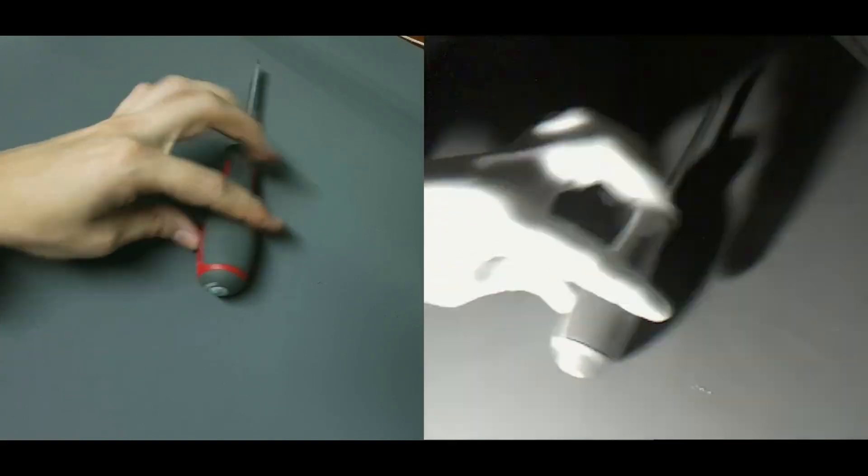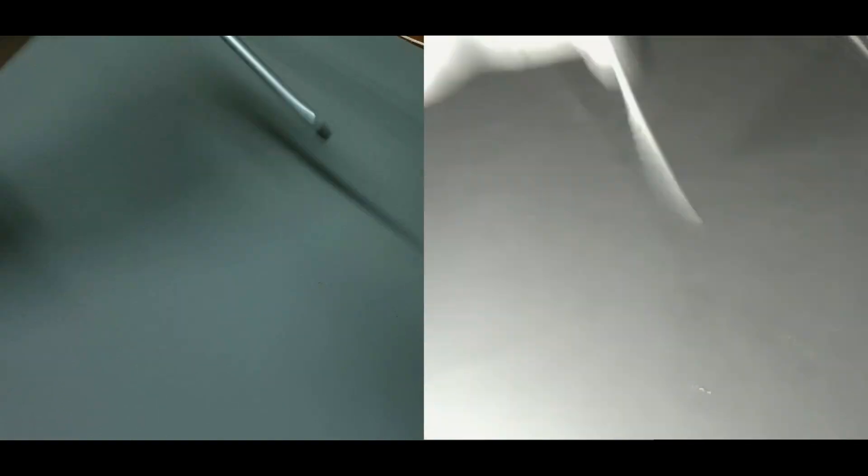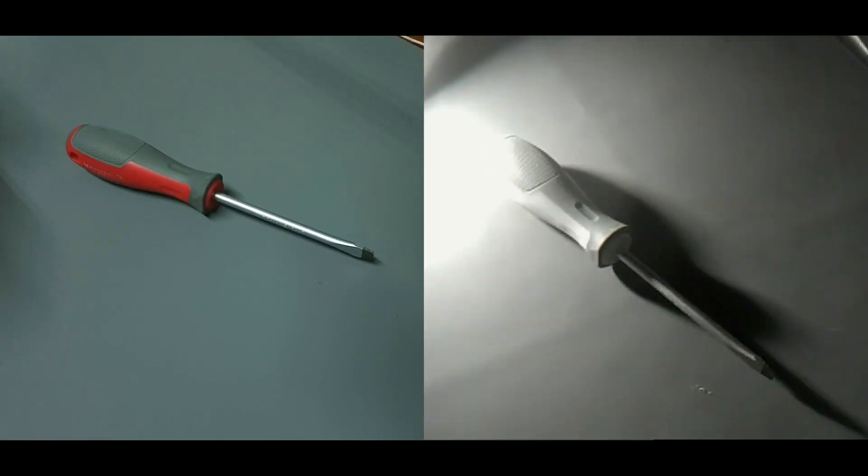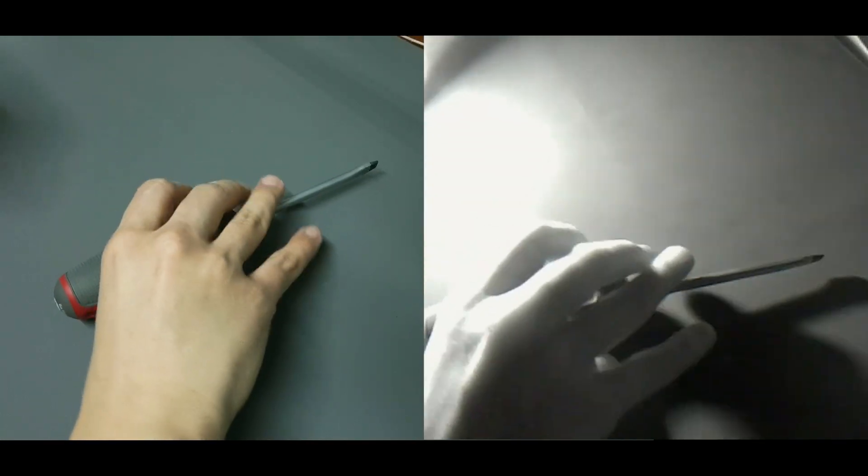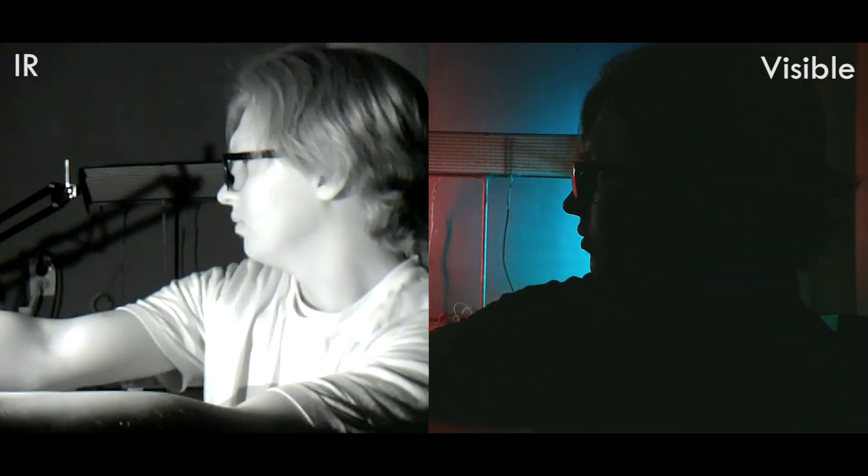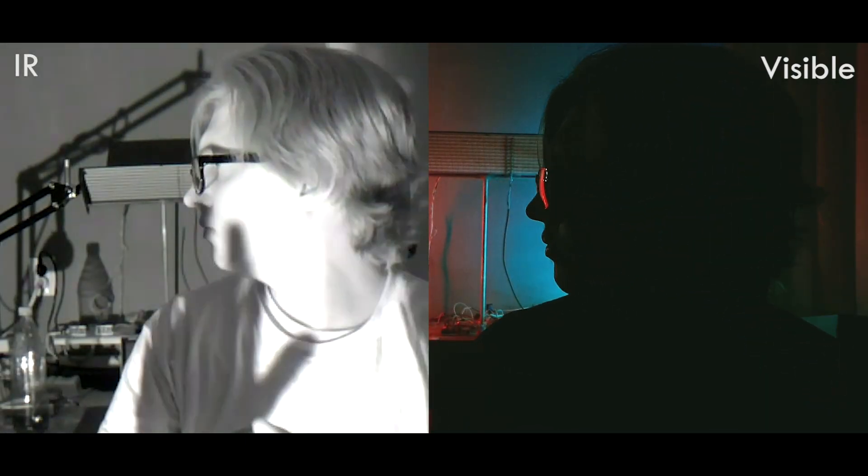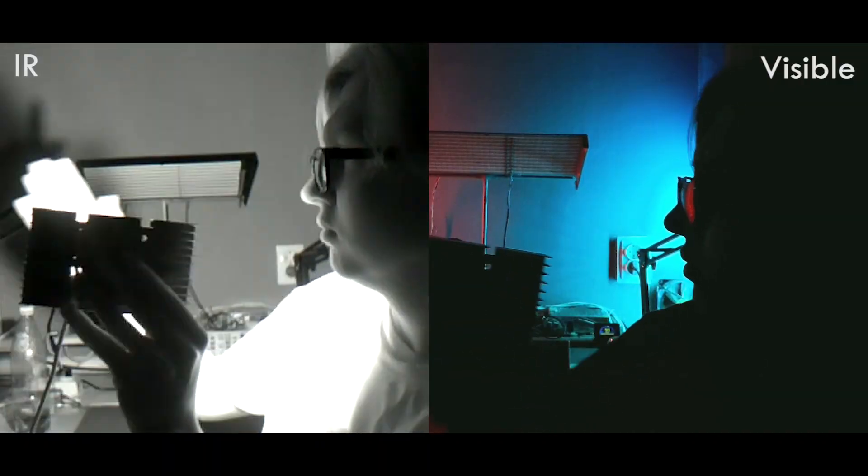That's fascinating, shadows from light that we cannot see. This is actually how many security cameras work at night. They emit invisible infrared light, so people may think they are in complete darkness, but in reality there is a bright light shining on them while the camera captures everything clearly.